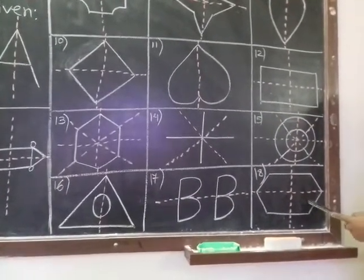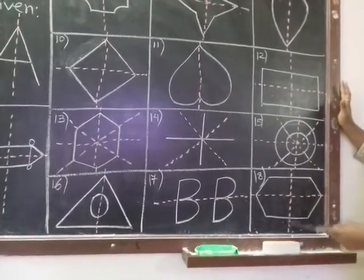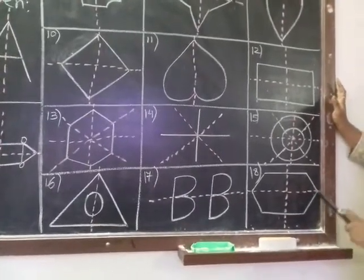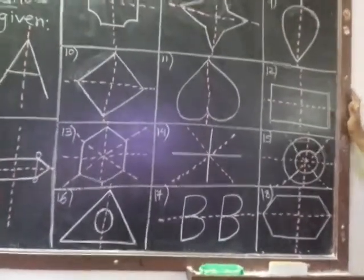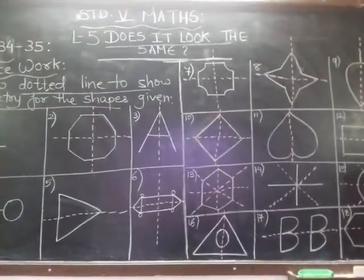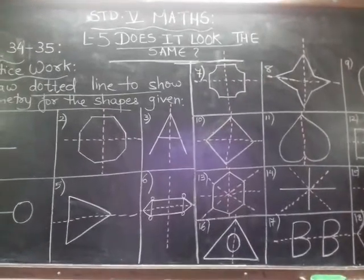And again, this is a hexagon. You can see, this can be divided into four equal parts vertically and horizontally. So this is what we had learned about how to divide the diagram or shapes with the help of a line of symmetry into two equal parts.